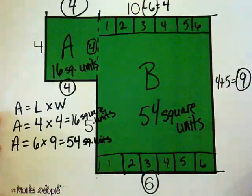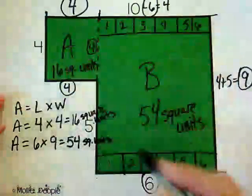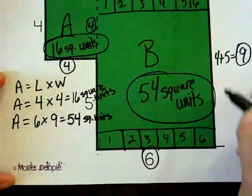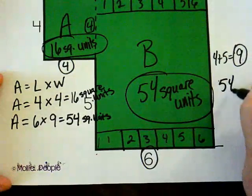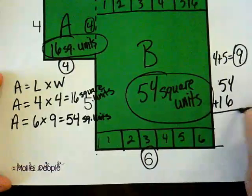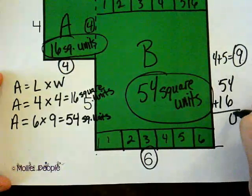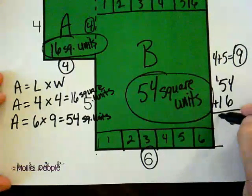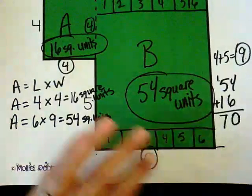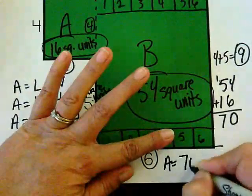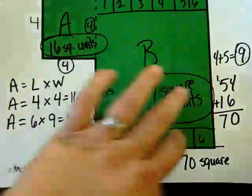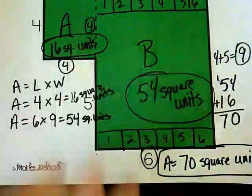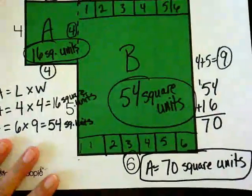So now what do I do to find the area of this entire shape? I need to add together my two areas. So I'm going to have fifty-four plus sixteen. Four and six is ten. Put down my zero. Carry my one. I have five, six, seven. So my area of this figure equals seventy square units. This is my answer. Seventy square units.